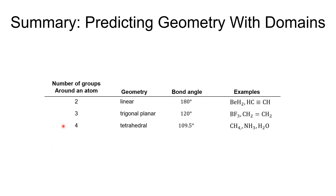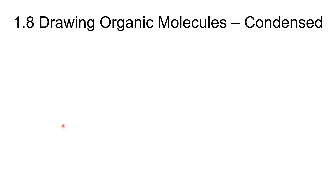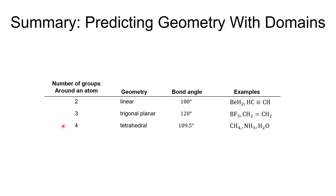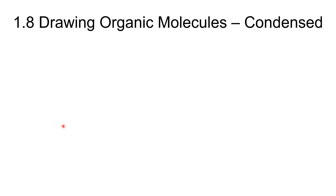To summarize: we can predict the geometry by counting the number of domains around the central atom.